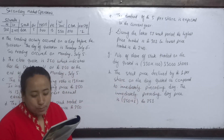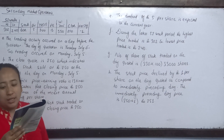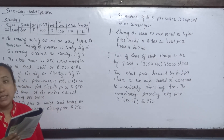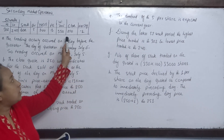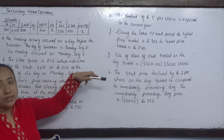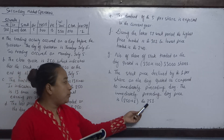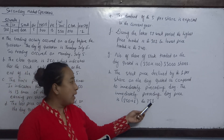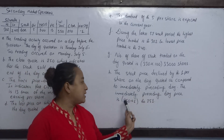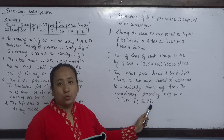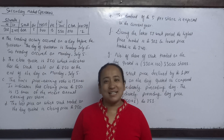At what price did the stock close on the immediately preceding day? If you want to see the preceding day's closing price, it is 251. The immediately preceding day price is 251.